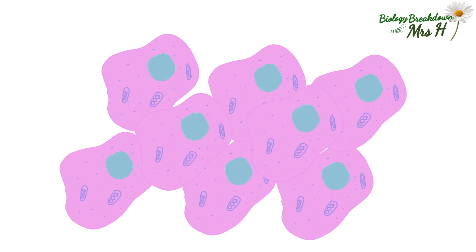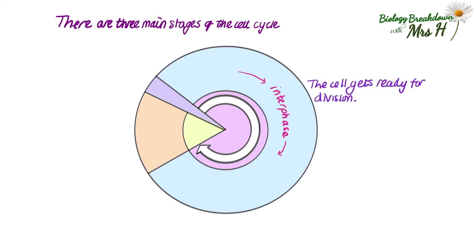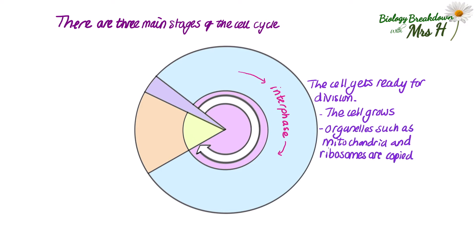Eukaryotic cells reproduce by doubling their contents and then splitting into two daughter cells. We need this process to occur to be able to grow and repair damaged tissues. There are three main stages of the cycle that you need to know at GCSE. The first stage is called interphase and this is when the cell gets ready for division. The cell grows, and organelles such as mitochondria and ribosomes must be copied and the DNA is replicated.